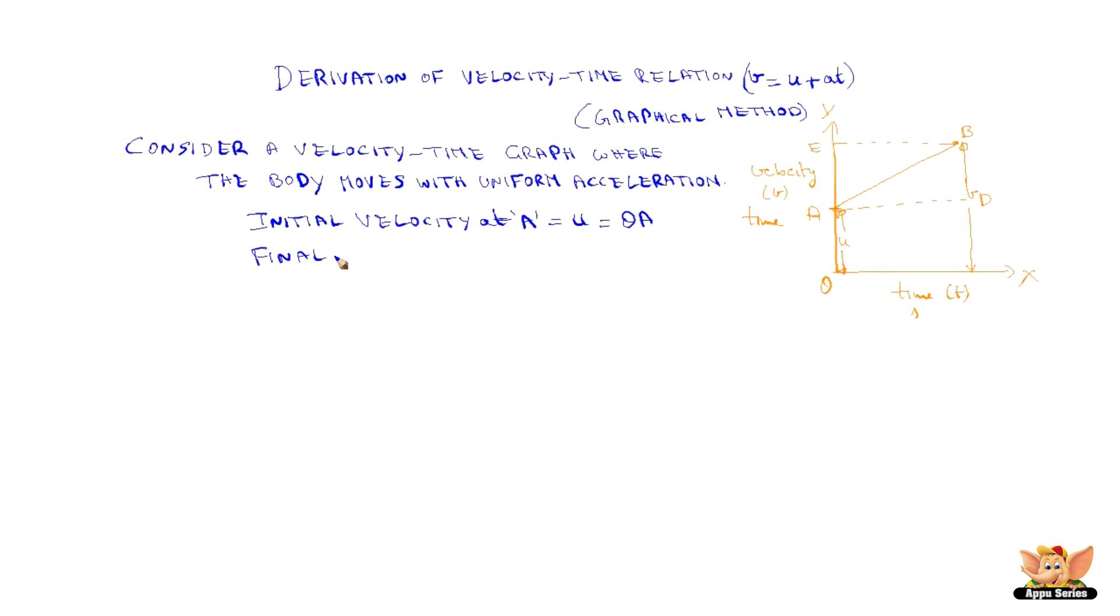And final velocity at B is v, which is BC. Let us say on the axis, the point is C.